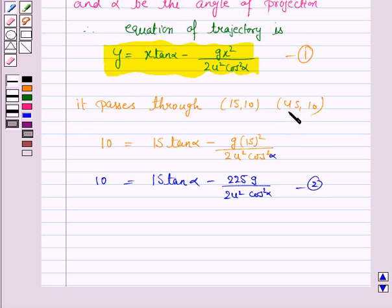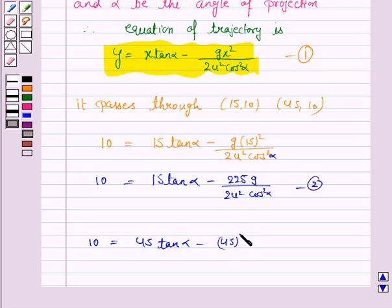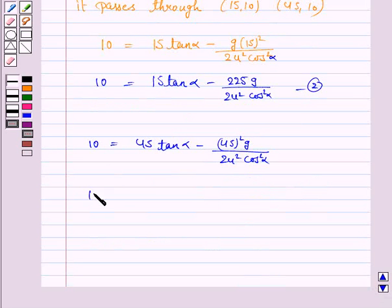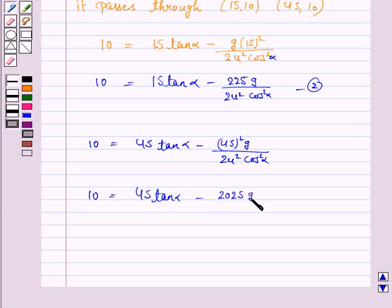Again we put x = 45 and y = 10 in the trajectory equation. So we have: 10 = 45·tan(α) minus (45)²·g upon 2u²·cos²(α). Let us name this as equation 3.